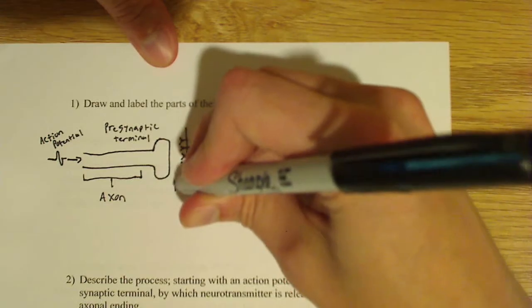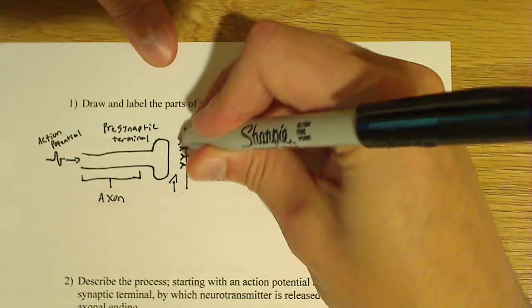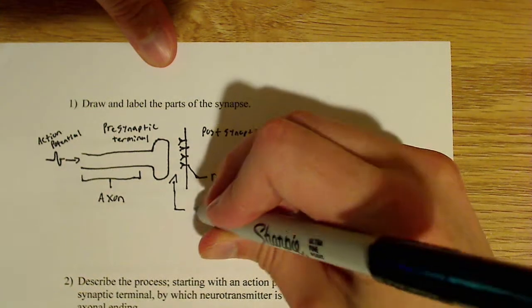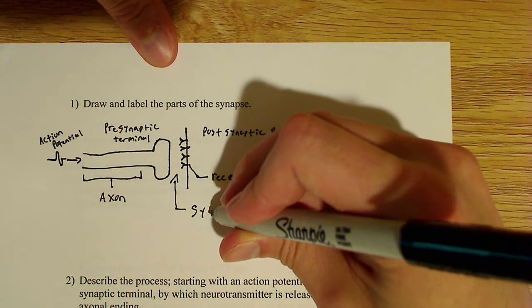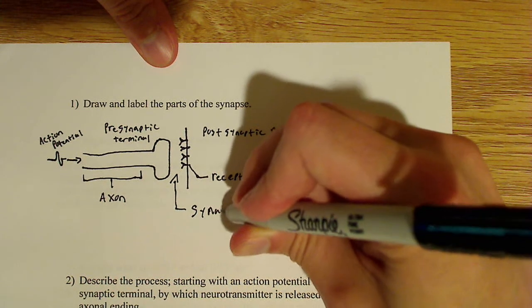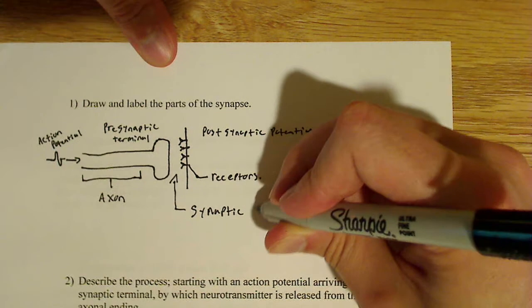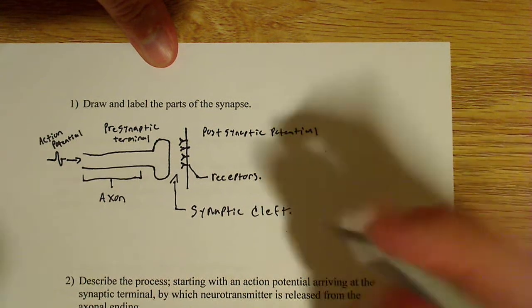And this section right in here, so all this in here, this space in here, is what's known as a synaptic cleft. So it's a synaptic cleft.